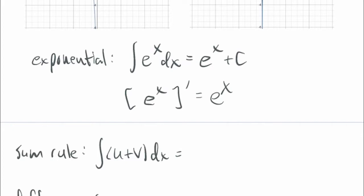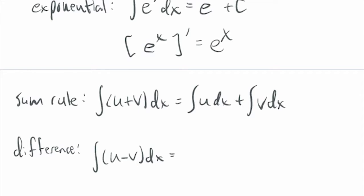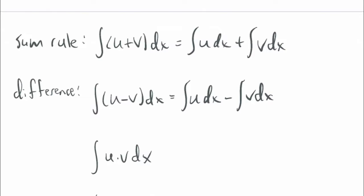How about the sum rule? If you have the antiderivative of some function u(x) plus some other function v(x), you just do them separately: antiderivative of u dx plus antiderivative of v dx. And for the difference of two functions: antiderivative of u dx minus antiderivative of v dx — handle them separately.